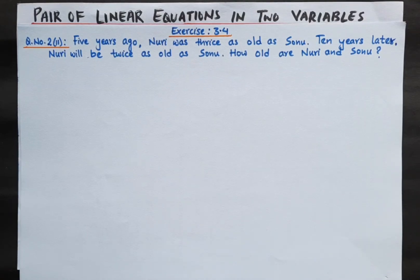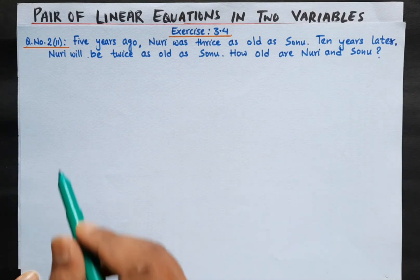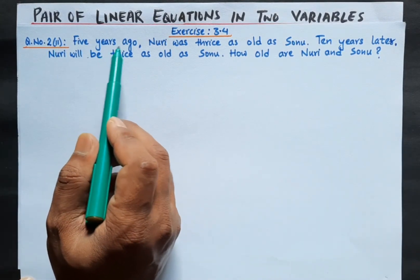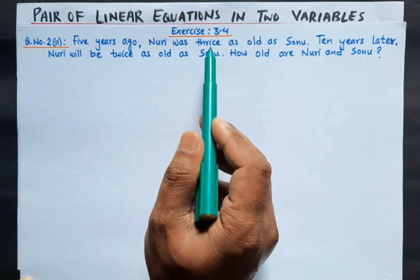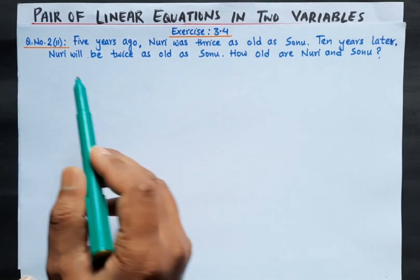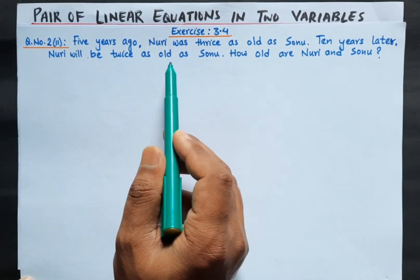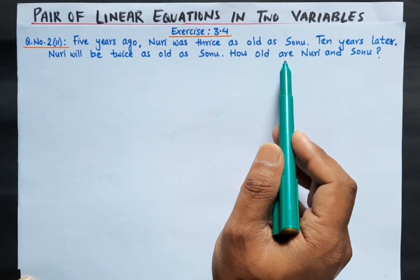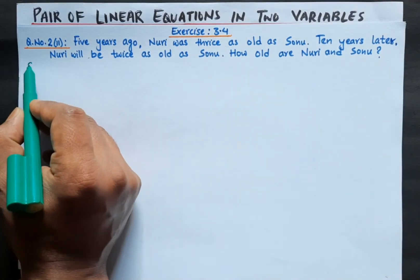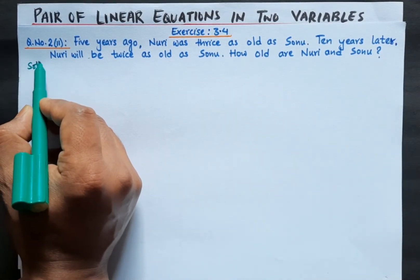Hello my dear children, welcome to our math class. In this class we are going to solve question number two from exercise 3.4. The problem states: five years ago, Nuri was thrice as old as Sonu. Ten years later, Nuri will be twice as old as Sonu. How old are Nuri and Sonu? This is an age-based question.